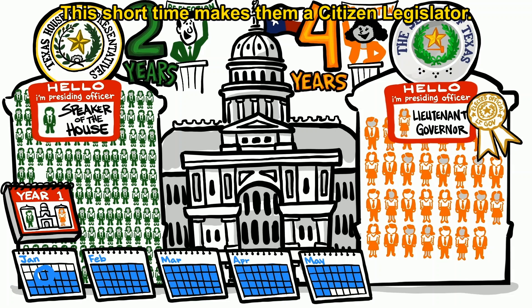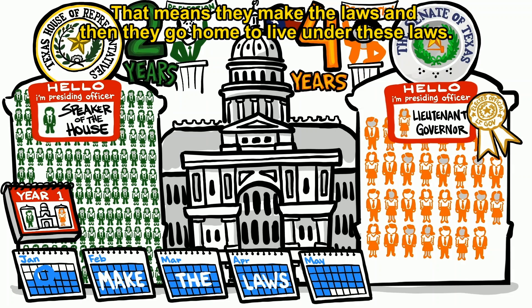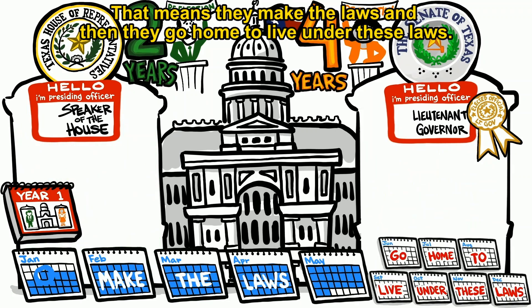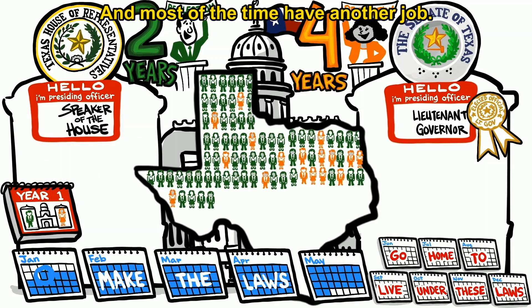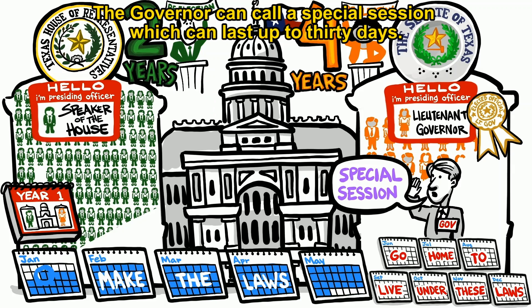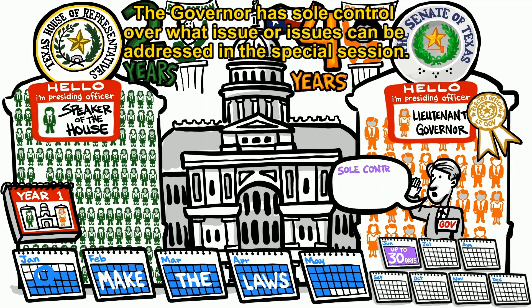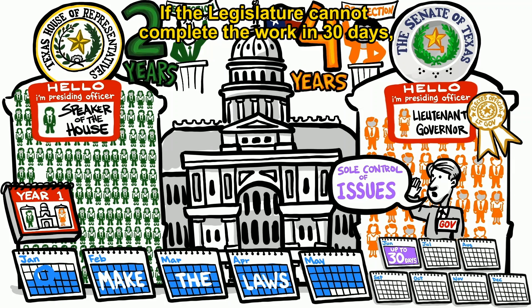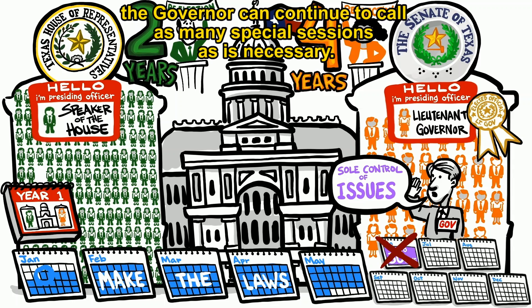The short time makes them a citizen legislator. That means they make the laws, and then they go home to live under these laws, and most of the time have another job. The governor can call a special session, which can last up to 30 days. The governor has sole control over what issue or issues can be addressed in the special session. If the legislature cannot complete the work in 30 days, the governor can continue to call as many special sessions as necessary.